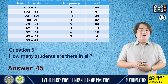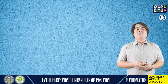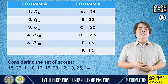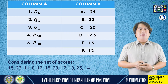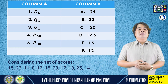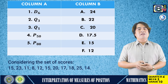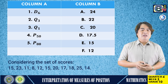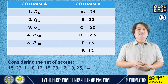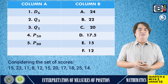Did you follow, my dear grade 10 learners? Let's have another set of activity. Match the measures of position in column A to its corresponding value in column B, considering the set of scores: 15, 23, 11, 8, 12, 15, 20, 17, 18, 25, and 14.